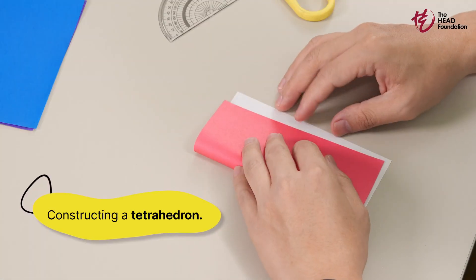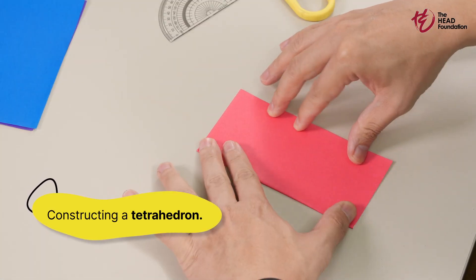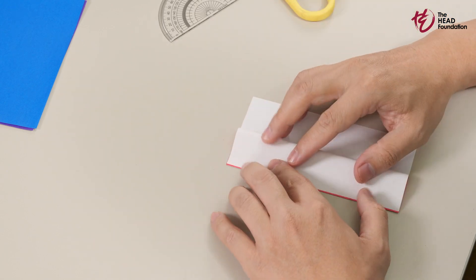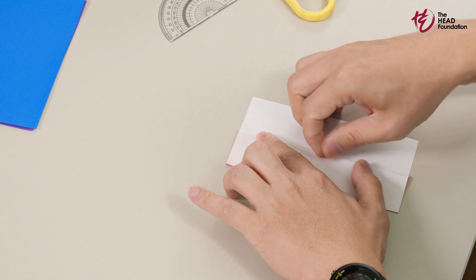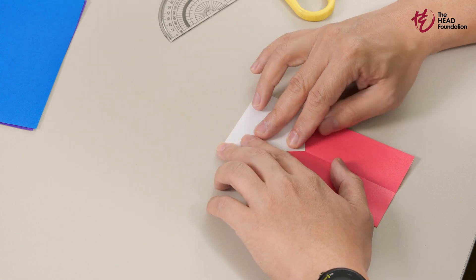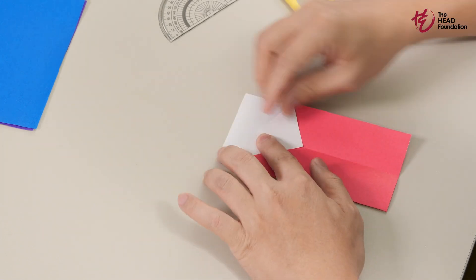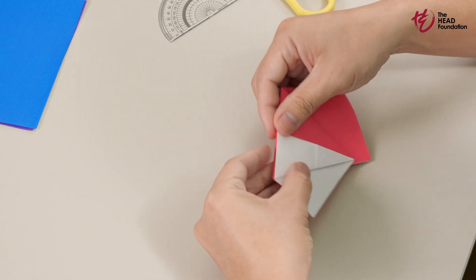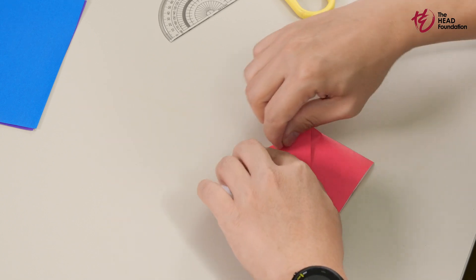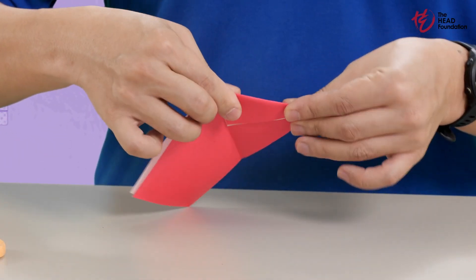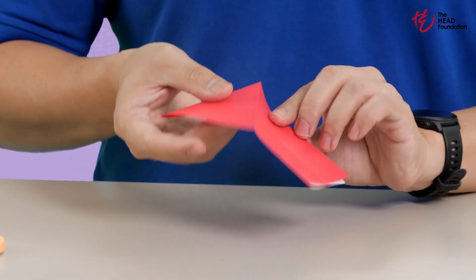First, fold your paper in half across the middle, bringing the left side over to meet the right. Just like that. Now with our midline fold hugging the left side, we're going to fold down the top half to strike up another midline crease. On this top layer, we're going to craft another 30-60-90 triangle. Then fold it along the shorter edge to form an equilateral triangle.